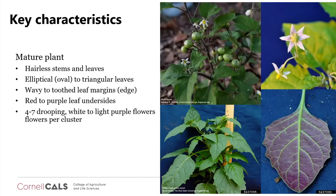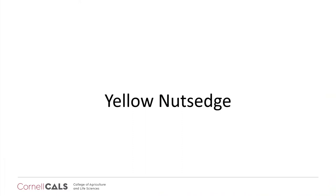As a mature plant, it continues being hairless — you might see a few occasional hairs, but nothing close to hairy nightshade. It has hairless stems and leaves. The leaves tend to be elliptical to triangular with wavy to toothed leaf margins, and the underside continues to be red to purple. The flowers tend to be in clusters of four to seven, droop downward, and are often white to purple. If you see purple drooping flowers that look like tomato flowers, there's a good chance you're looking at eastern black nightshade.